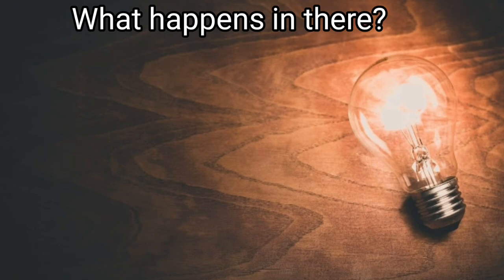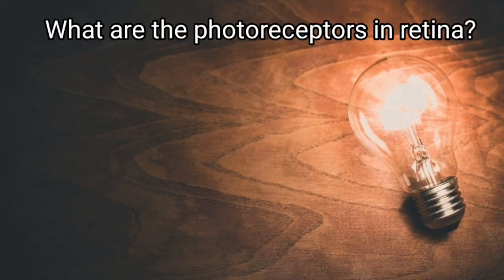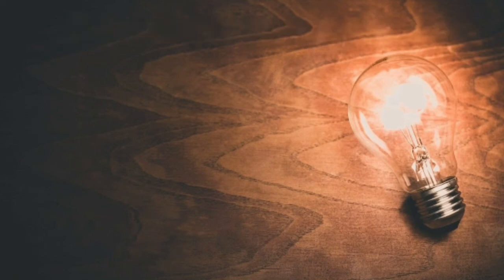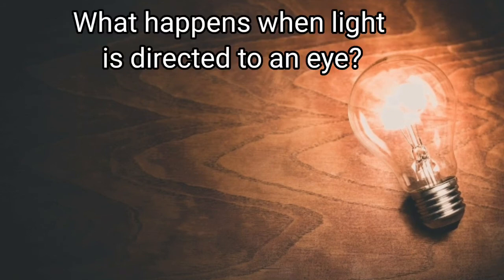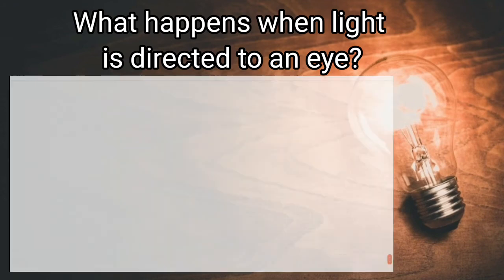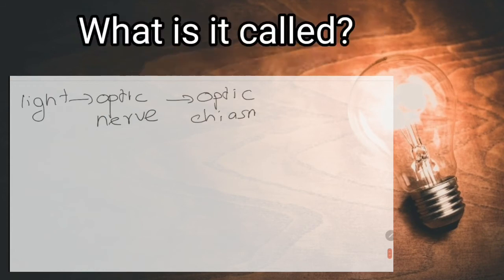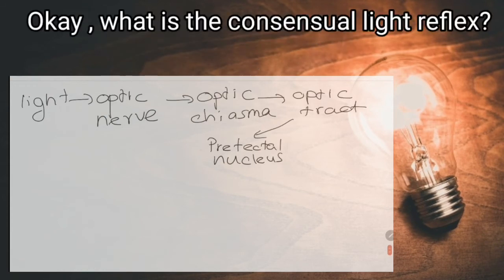What are the photoreceptors in retina? Rods and cones. What happens when light is directed to an eye? The pupils of both eyes are constricted. What is it called? Light reflex. What is the consensual light reflex? When light is directed to one eye, the pupil of the other eye constricts.